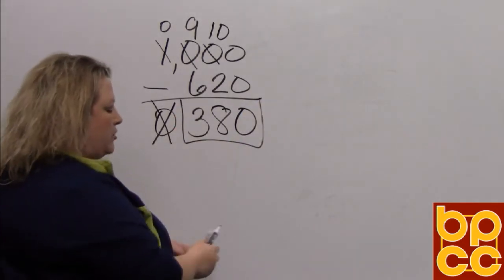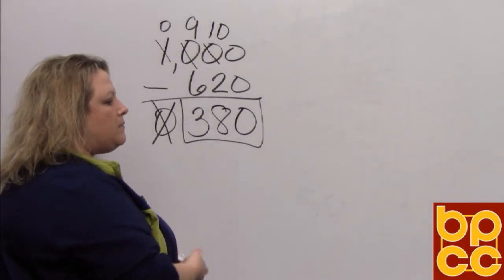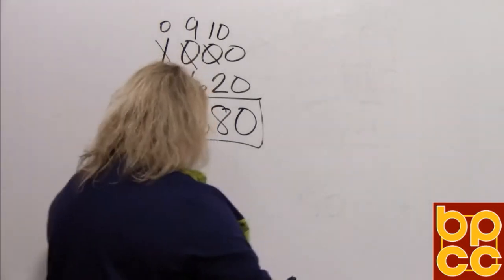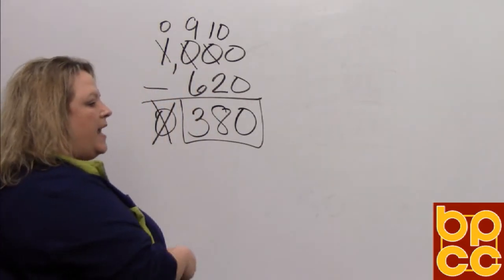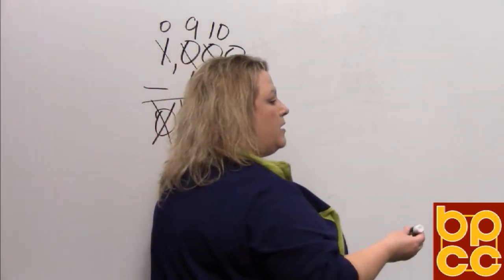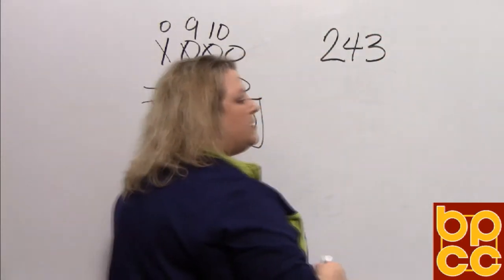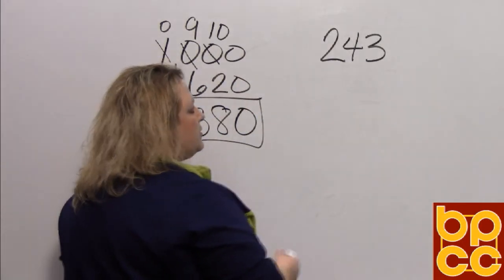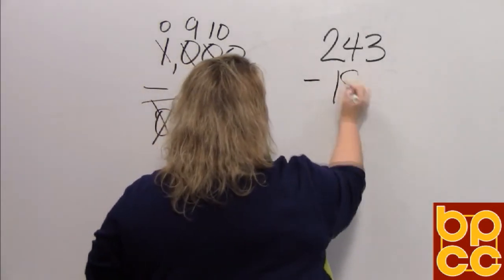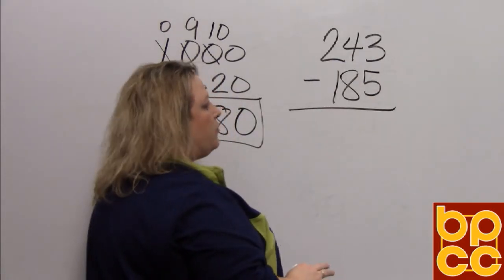Remember that you want to make sure that you add to check if you did this correctly. The next thing we're going to do is go through a word problem. The word problem talks about somebody's blood cholesterol level, which is 243, and we need to decrease it to 185. In order to find out how much we need to go down, we're going to subtract, because that's what 'decrease' means.